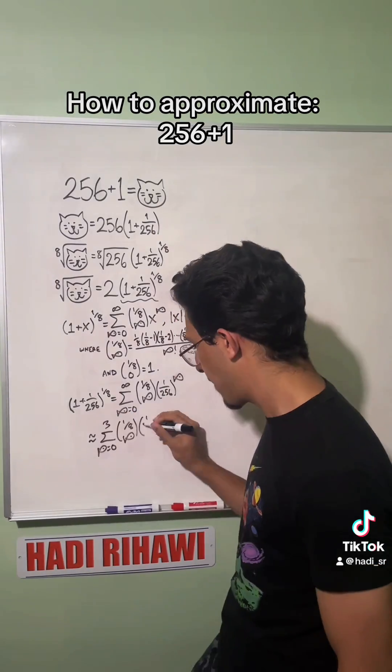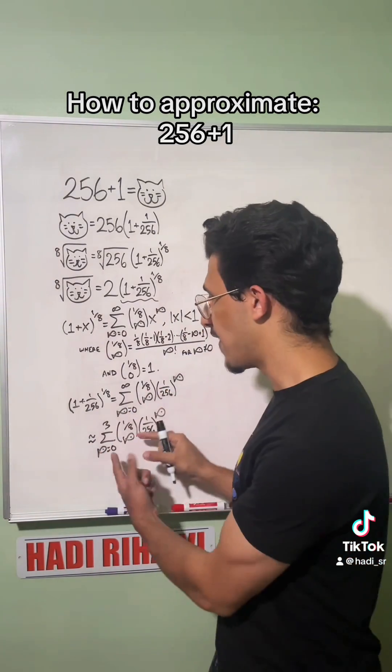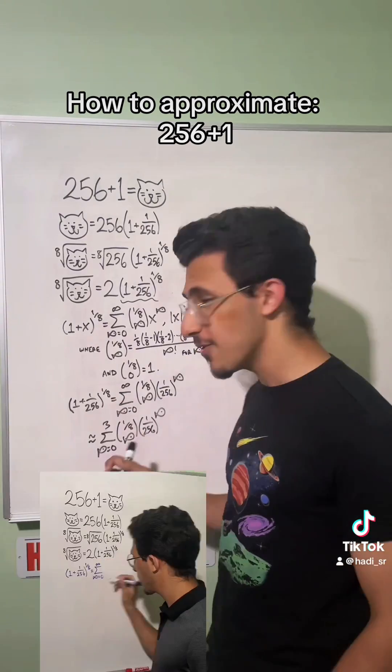So this is going to be approximately—these terms get smaller and smaller, so this is very close. At least up to the amount of decimals that I wanted, this is pretty good. So you can see the computation I did in video. That's all that work, just computing this.